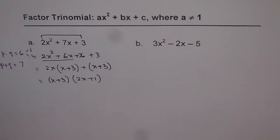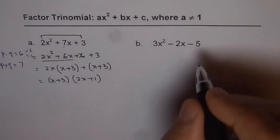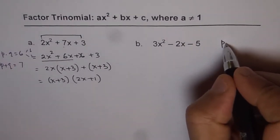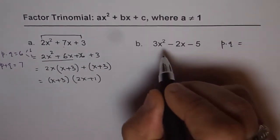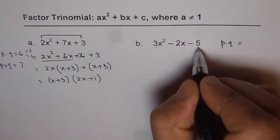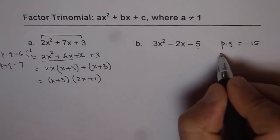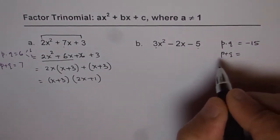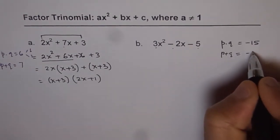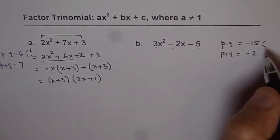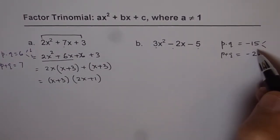So we will adopt the same strategy for part b. See it carefully now. Now, p times q should be 3 times -5. So, -15. And their sum, p and q, should be -2.